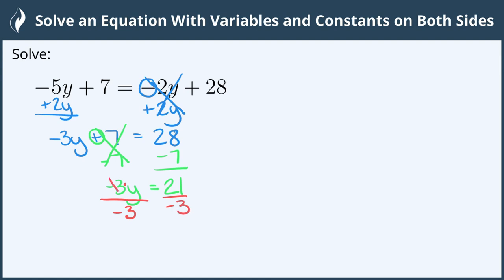Negative 3 divided by negative 3 cancels. So we're left with y, which equals 21 divided by negative 3 is negative 7. So our solution is y equals negative 7.